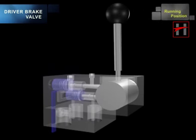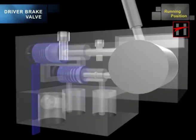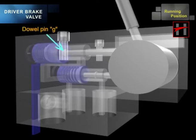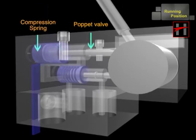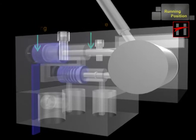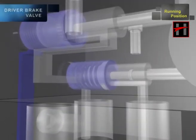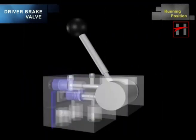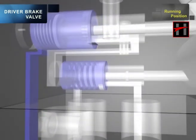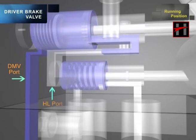As the handle is moved towards the running position, the dowel pin pushes open the valve head of the poppet valve against the compression spring. This opens the valve seat V2. The air passage between the ports DMV and HL is opened through a large bore.